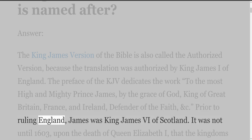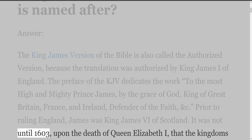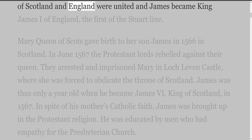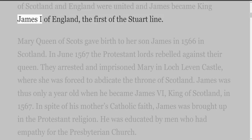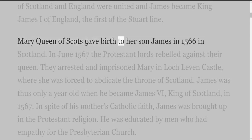Prior to ruling England, James was King James the Sixth of Scotland. It was not until 1603, upon the death of Queen Elizabeth the First, that the kingdoms of Scotland and England were united and James became King James the First of England, the first of the Stewart line. Mary Queen of Scots gave birth to her son James in 1566 in Scotland.